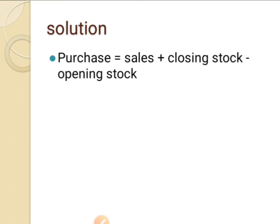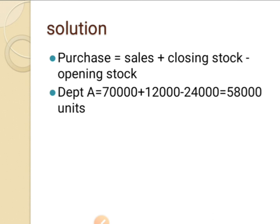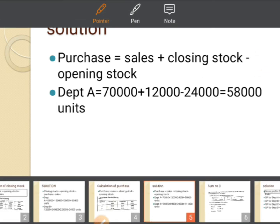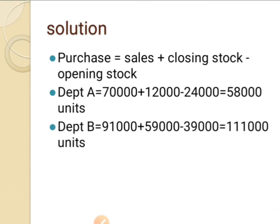Purchase is equal to sales plus closing stock minus opening stock. You need to remember this formula to find out all small calculations. For department A: sales 70,000 plus closing stock 12,000 minus opening stock 24,000 gives 58,000. For department B: sales 91,000 plus closing stock 59,000 minus 39,000 gives 1,11,000 units.